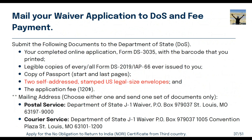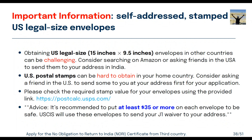Documents required for the DS-3035 application include all DS-2019 copies, copy of passport, and two self-addressed stamped US legal-size envelopes, plus the 120 dollar application fee. There are two mailing addresses — one for government postal service and one for private courier. Obtaining US legal-size envelopes in some countries can be challenging; you can buy them on Amazon or ask a friend in the USA to send them to your address.